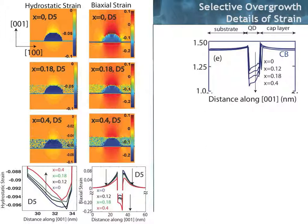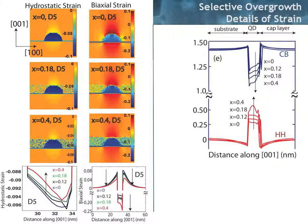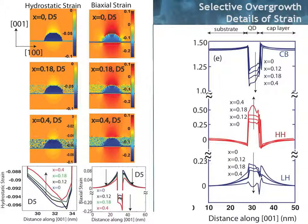That has consequences on the band edges, similar to the presentations we had seen before. You can translate that by looking at the conduction band edge cut vertically through the middle of the quantum dot. As the indium concentration is ramped up from 0 to 0.4, you see the conduction band edge going down inside the quantum dot, the heavy hole bands going up, and the light hole bands actually going down — they move differently than the heavy hole bands. Effectively, the conduction band going down and the heavy hole going up means the band gap is getting narrower, which is what you want for achieving larger and larger wavelengths.